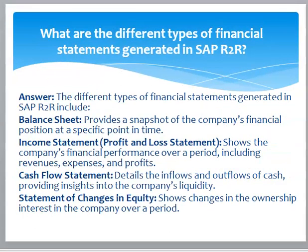What are the different types of financial statements generated in SAP R2R? Answer: The different types of financial statements include: balance sheet — provides a snapshot of the company's financial position at a specific point in time; income statement (profit and loss statement) — shows the company's financial performance over a period including revenues, expenses, and profits; cash flow statement — details the inflows and outflows of cash, providing insights into the company's liquidity; and statement of changes in equity — shows changes in the ownership interest in the company over a period.